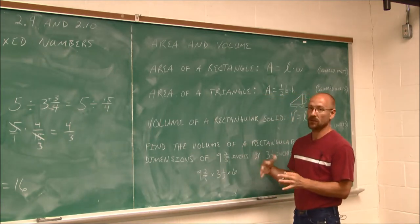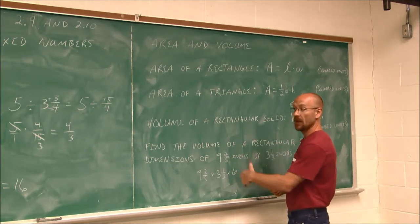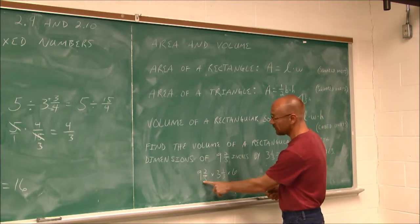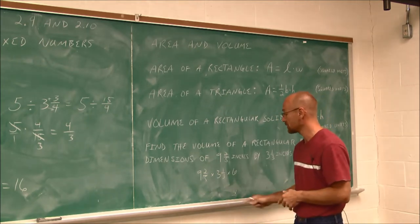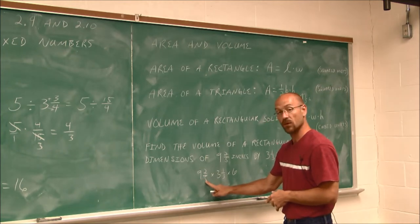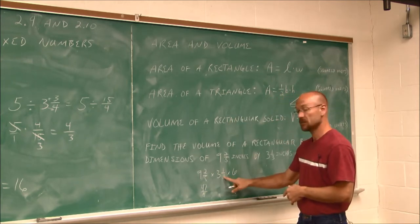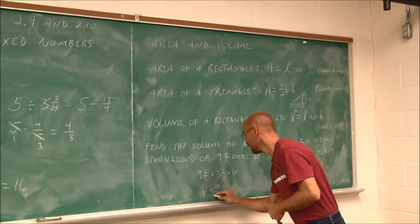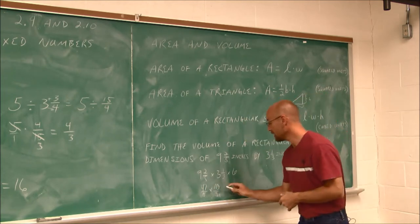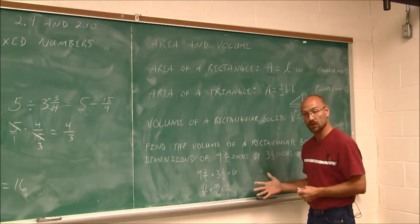Now because it's multiplication, we don't have to worry about a common denominator. All we have to do is multiply them together. And as we've seen in the previous example, in order to multiply or divide mixed numbers, we write them as improper fractions. So 9 times 5 is 45 plus 2 is 47. And then we have 3 times 3 is 9 plus 1 is 10, 10/3. And 6, we can think of that 6 as being over 1. And now I'm ready to multiply.